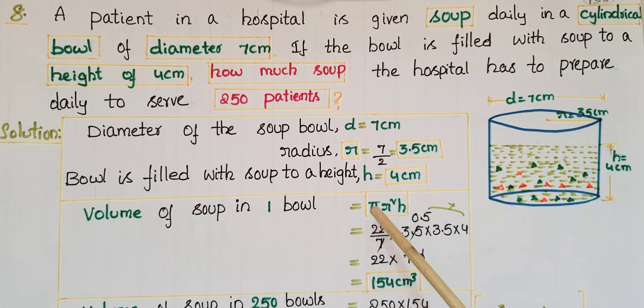That is equal to pi value is 22 by 7 into r value is 3.5 into 3.5 into h value is 4 centimeters. So 7 ones are 7.5 or 3.5, then multiply 0.5 into 4 is 2, 2 into 3.5 is 7, so 22 into 7 is equal to 154 centimeter cube.